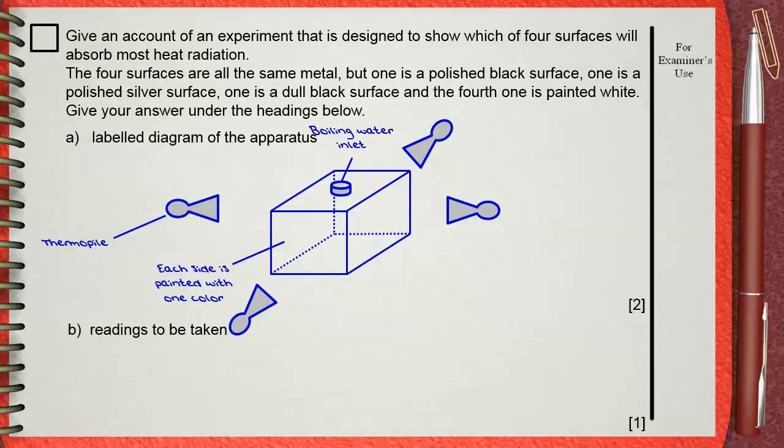By taking the reading of the temperature on each thermopile, we can know which surface is the better absorber of heat. And of course, it will be the dull black. The dull black will absorb heat from the boiling water and emit it outside the box, so the thermopile that is facing the dull black surface will give the higher reading of temperature.